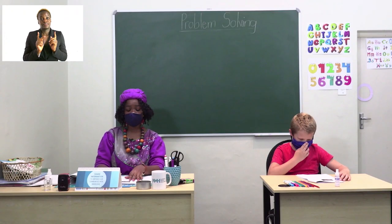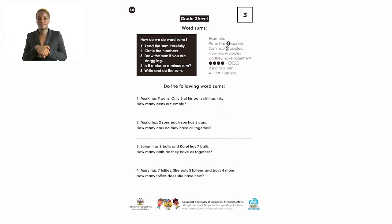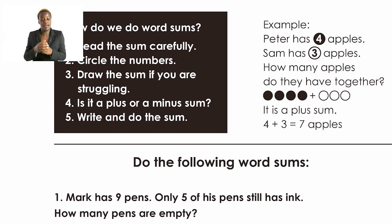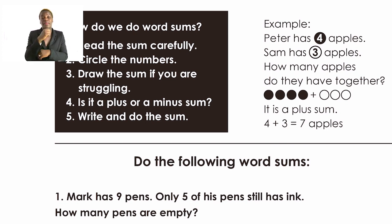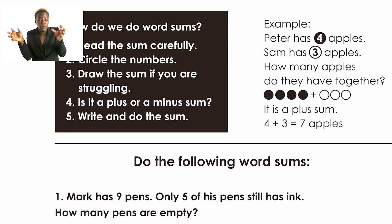Turn to page 14, Grade 2 level, and we will start with word sums. Word sums are almost like a riddle. There are rules we need to follow: read the sum carefully and understand what you are reading; circle the numbers in the word sum and draw the sum if you are struggling; decide whether it is a plus or minus sum. For example, Peter has four apples and Sam has three apples — how many apples do they have altogether? You need to add, because we want to find the total number of apples together.